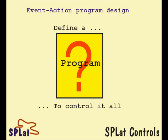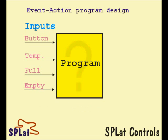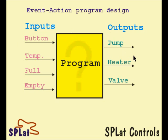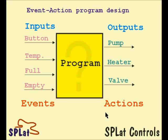We need to define how the program is going to take the inputs from those sensors — the float switches, etc. — and control the pump, the valve, and the heater. We look upon the inputs to the program as the signals generated by the button, the temperature sensor, the full switch, and the empty switch. The outputs of the program are the signals that drive the pump, the heater, and the valve. The inputs are the things that generate events — the program can't directly control these, they're just going to happen. The outputs are what the program can control, which we call the actions.